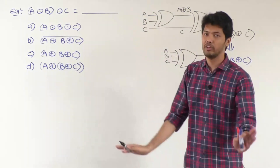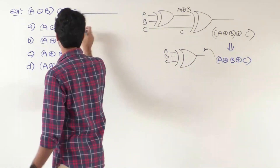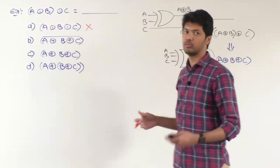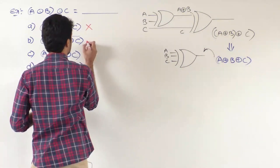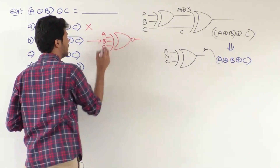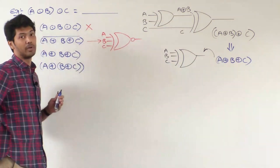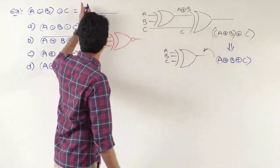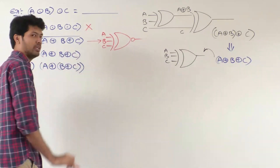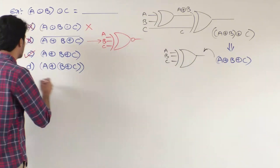Notice that A XNOR B XNOR C is NOT equivalent to a three-input XNOR gate. Option A is a three-input XNOR gate — that is not correct. Option B is a three-input XOR gate with a complement on the output, representing (A XOR B XOR C) complemented — that is also not our function. Option C is A XOR B XOR C, a three-input XOR operation — that is the correct answer. Option D is also a three-input XOR gate, so D is also a correct answer.